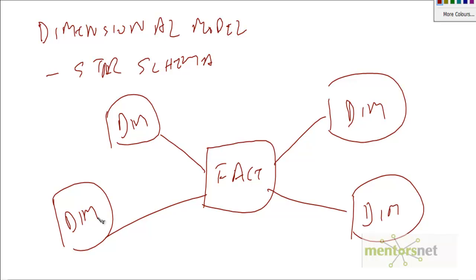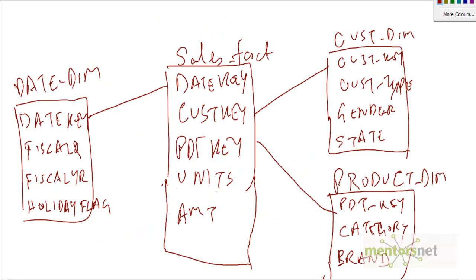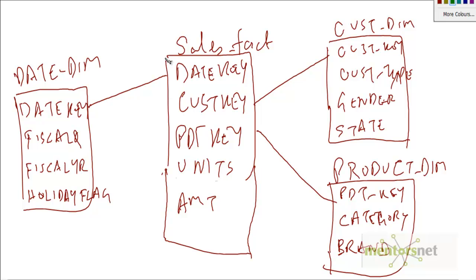Let's look at an example of a dimensional model. We have a sales fact table — this is the central table. It is surrounded by a date dimension, customer dimension, and product dimension. The fact table contains the measures of the business. In this case, it contains the daily sales done by a customer against different products. The daily part or the sales amount is also called the grain of the fact table.